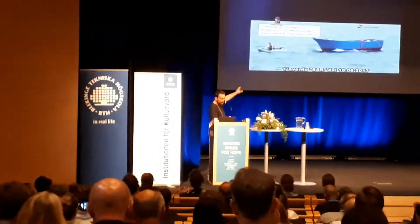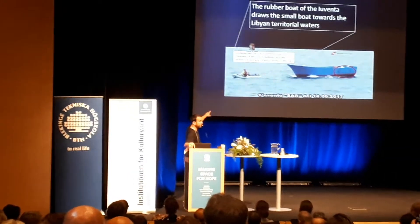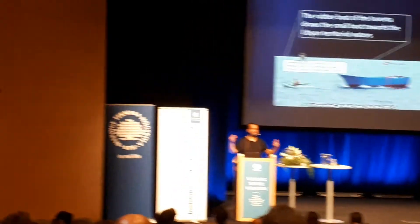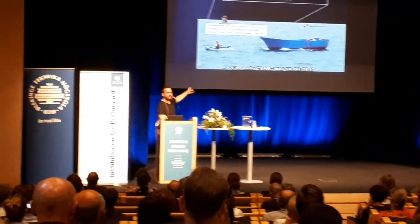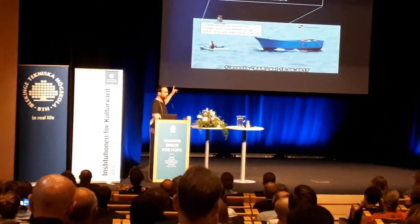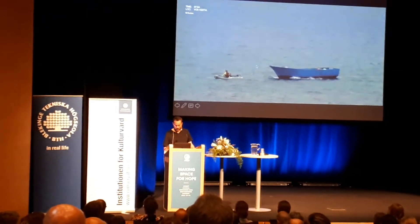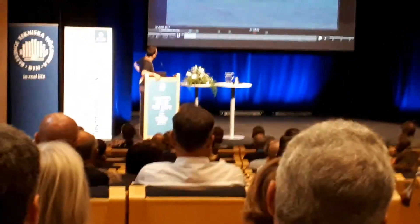An Italian prosecutor claimed that an image shows an NGO group on a dinghy towing an anti-migrant boat back to the Libyan coast — presumably to help people smugglers bring more people. That is a serious accusation. But there is nothing in this image that shows in which direction they are towing. So why are they saying they're towing toward the Libyan coast?